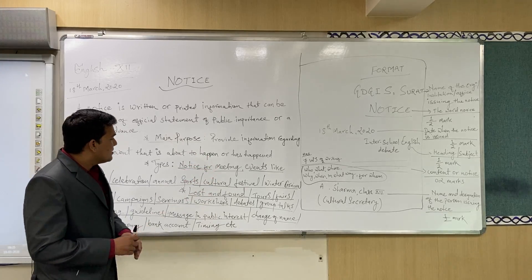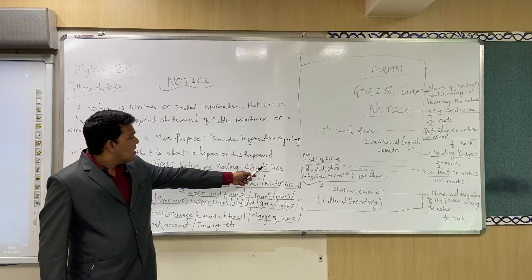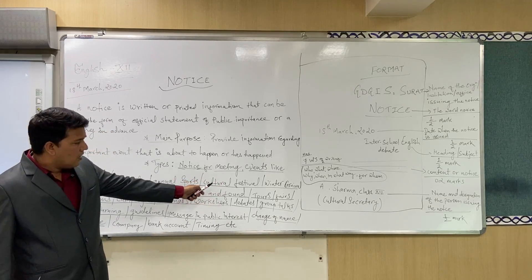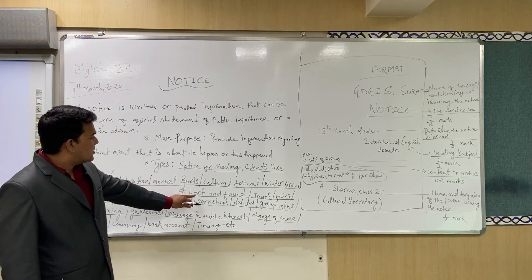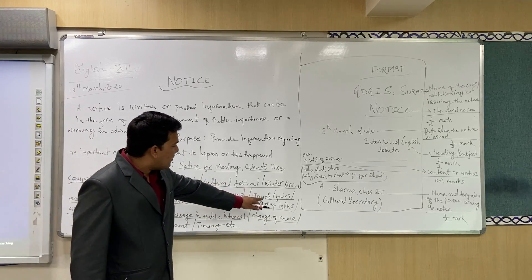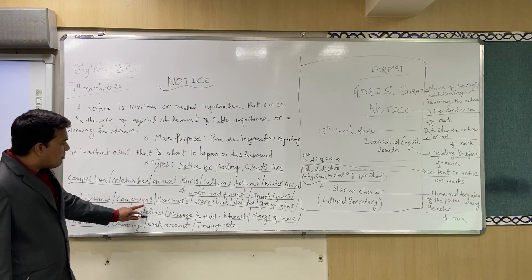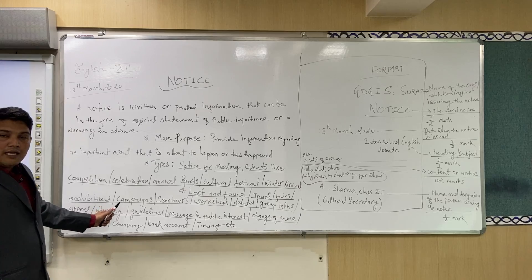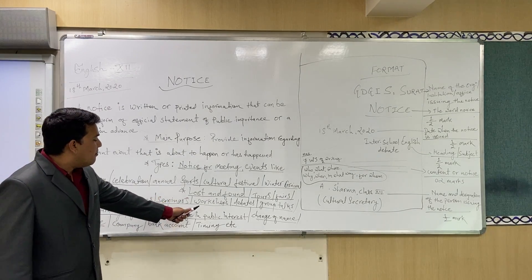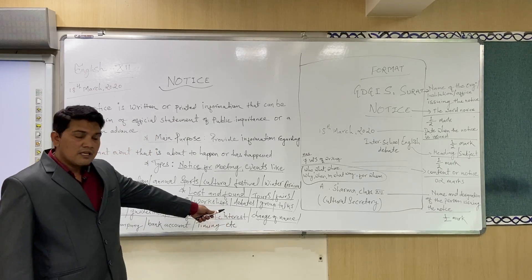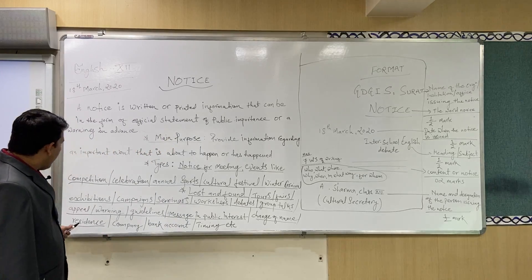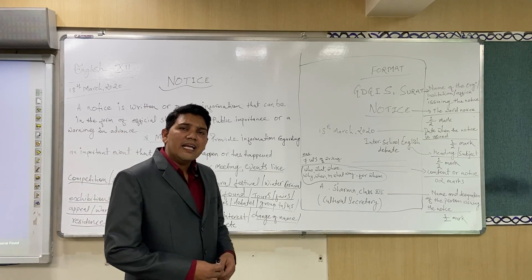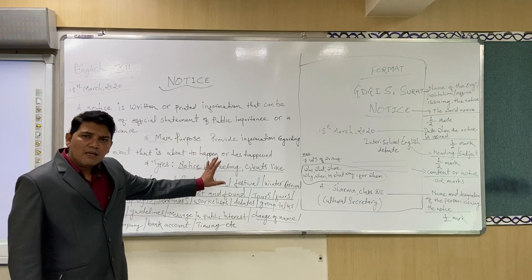There are many types of notices. Some important types include: notice for meetings; notice for events like competitions, celebrations, annual sports, cultural festivals, and winter carnivals; notice for lost and found; notices for tours, fairs, exhibitions, campaigns, seminars, workshops, debates, and group talks; warning notices and guidelines; and notices for change of name, residence, company, bank account, or timings of any organization.